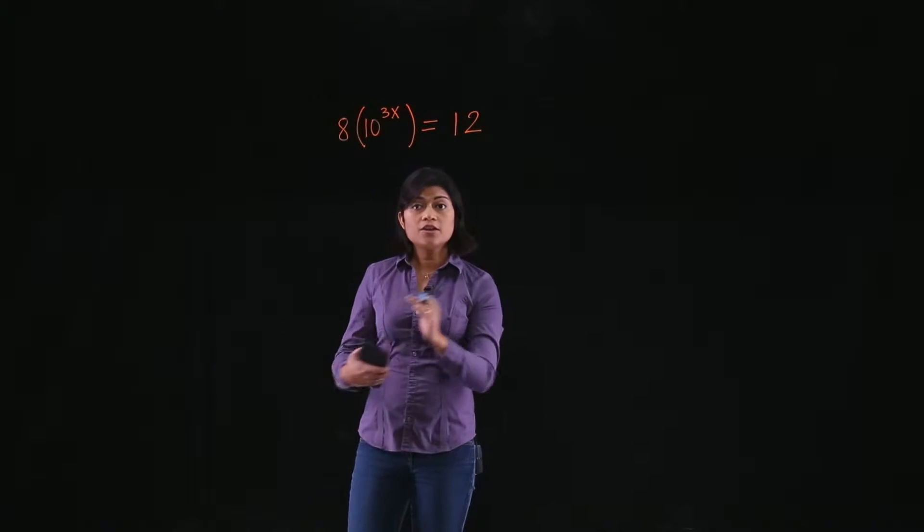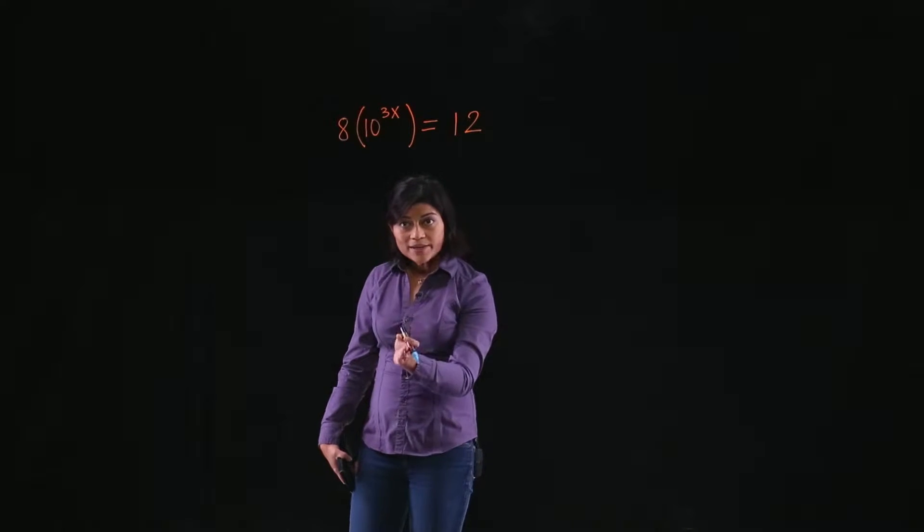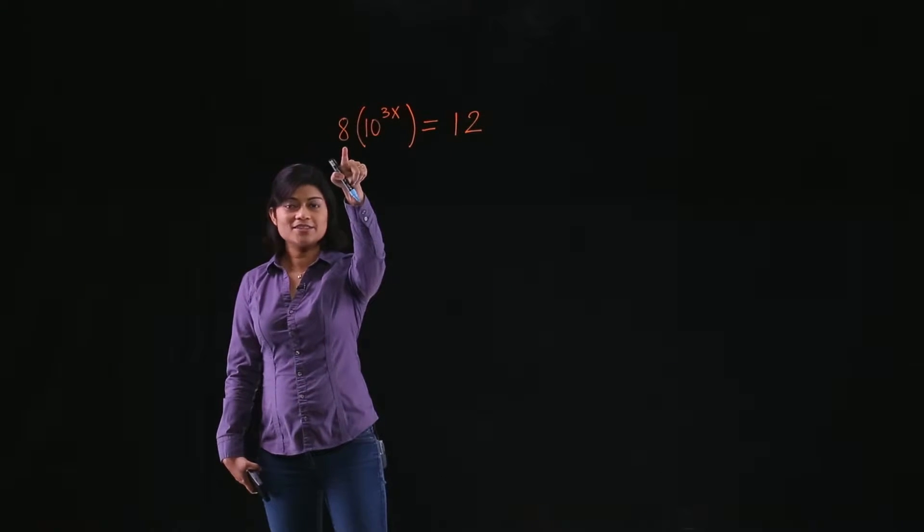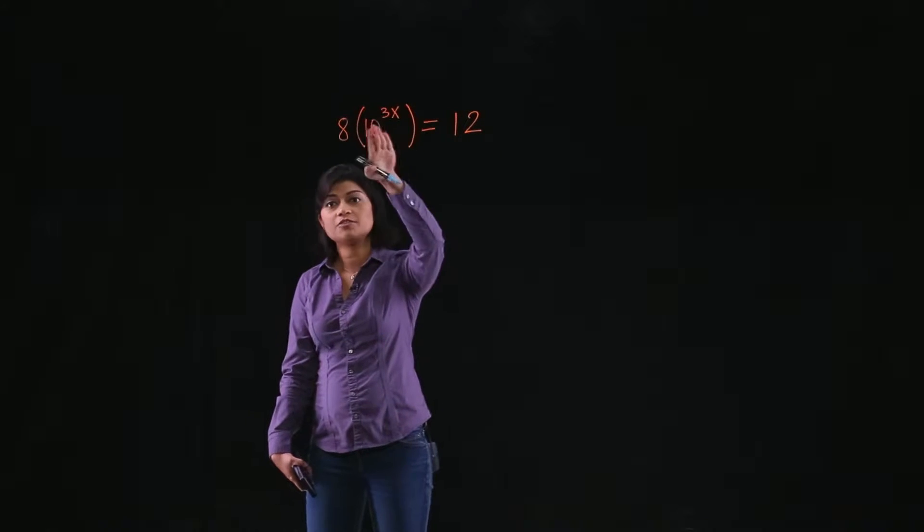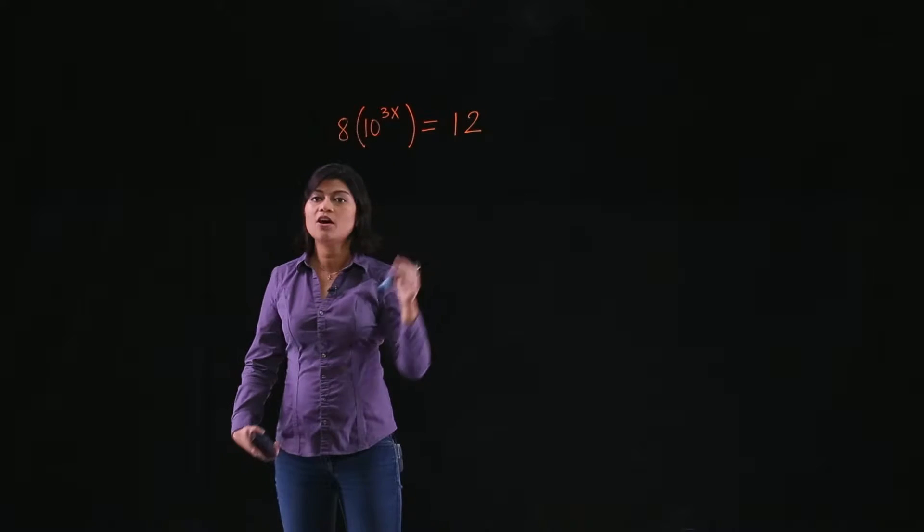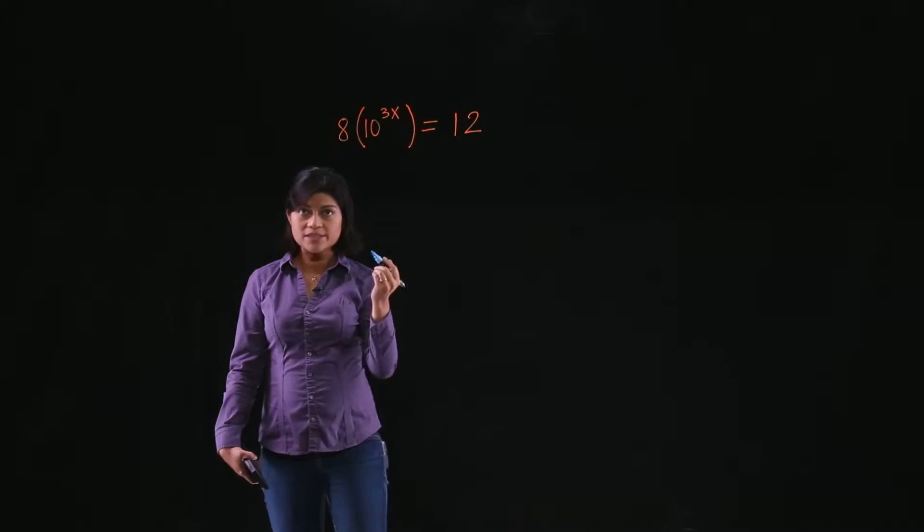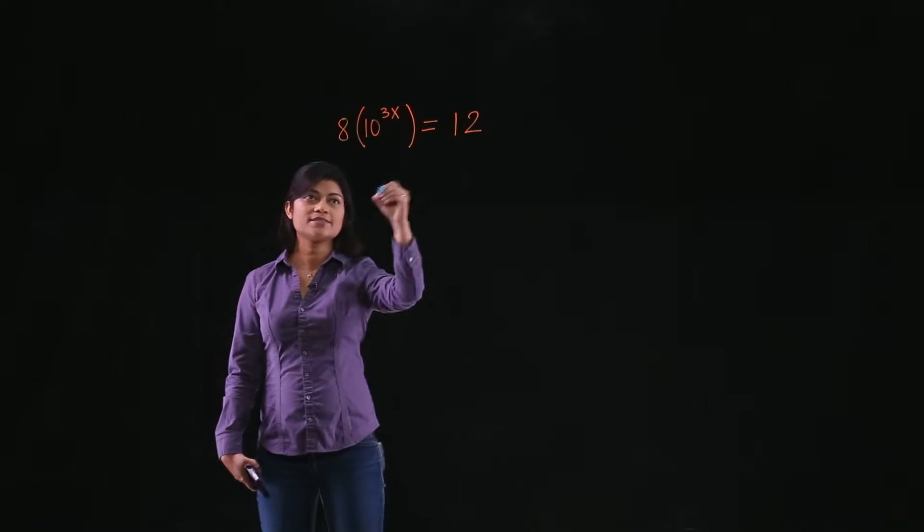But before you apply logarithm to both sides, you have to be extremely careful. See, this 8 here is a constant multiple. You have to first divide by 8. You have to make this exponential function completely free of any constant. So let's start with that. Divide by 8 both sides.